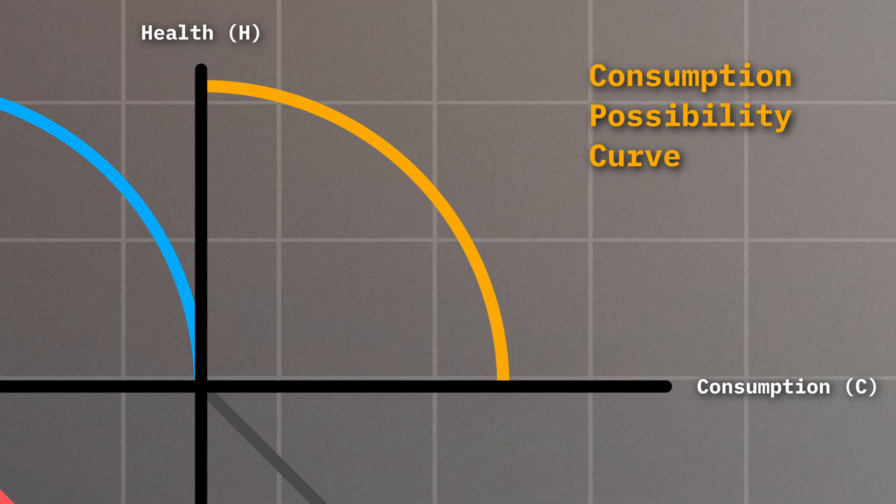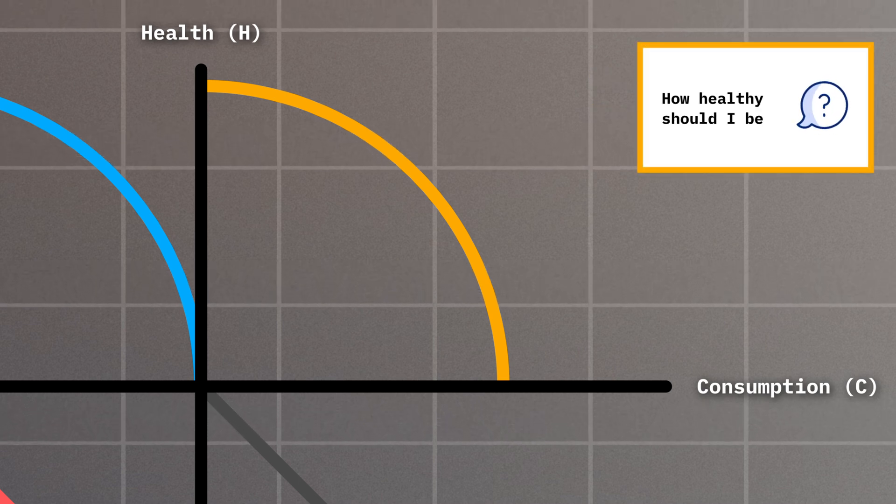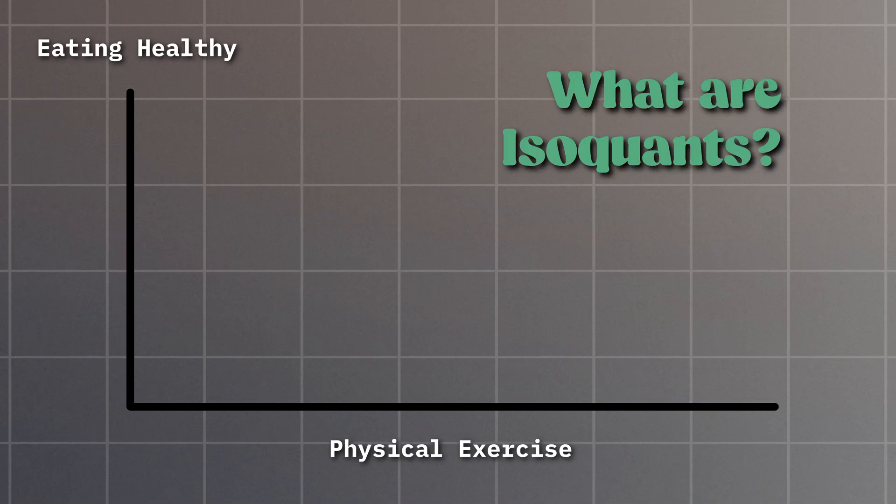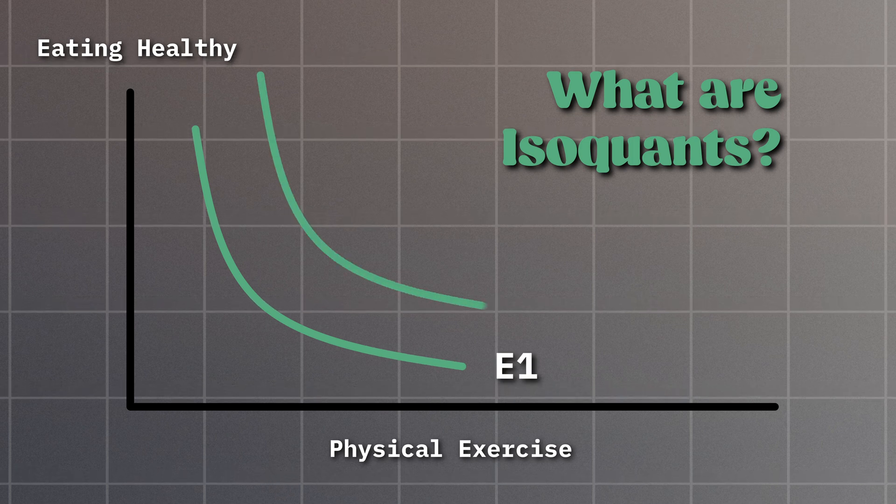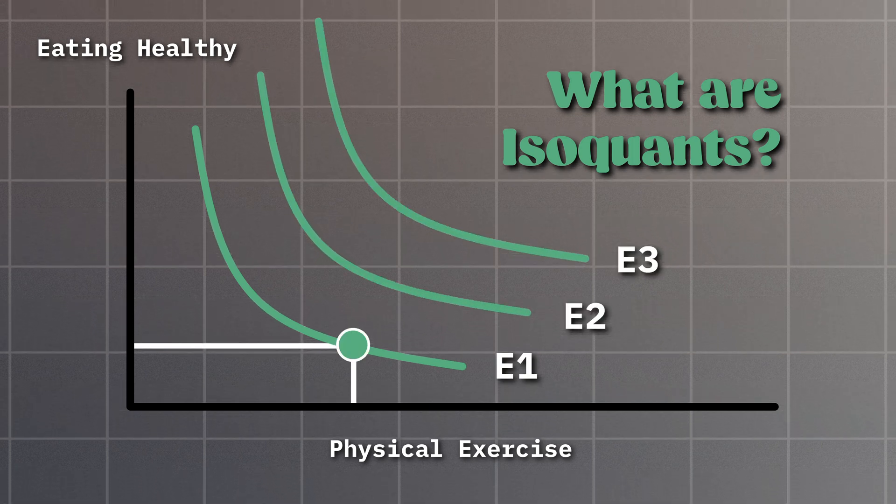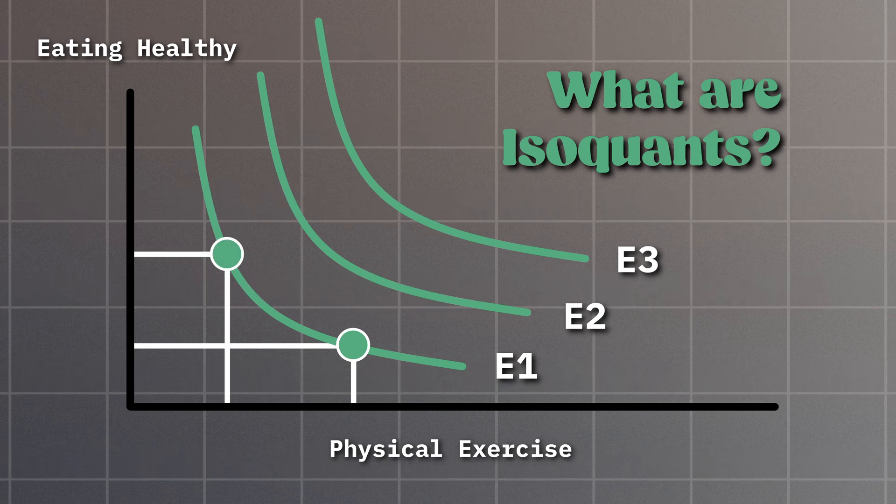Ignoring these two unrealistic extreme scenarios, you may wonder, how healthy should I be? To answer this, we need to introduce isoquons. Isoquons show a combination of two inputs that produce the same level of health stock. For example, these two inputs could be eating healthy and doing physical exercise. Regardless of which combination of eating healthy and exercising we choose, we produce the same level of health stock.